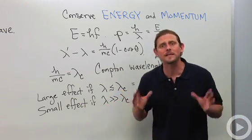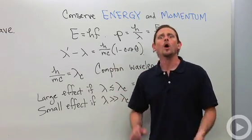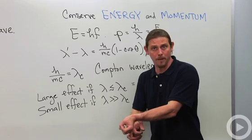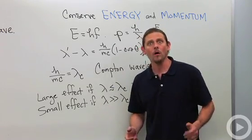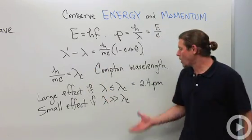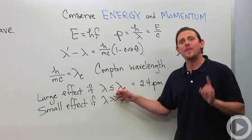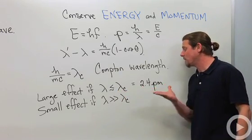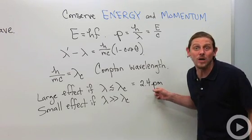So that gives us a quantitative explanation of what is meant by what I said earlier. Large wavelength behaves like a wave, small wavelength behaves like a particle. Large compared to what? Small compared to what? Large or small compared to the Compton wavelength of the electron. That Compton wavelength is really small, 2.4 picometers. So a picometer is a trillionth of a meter.